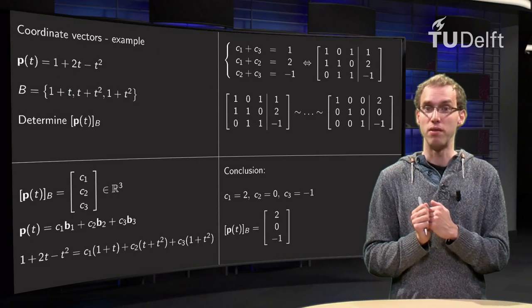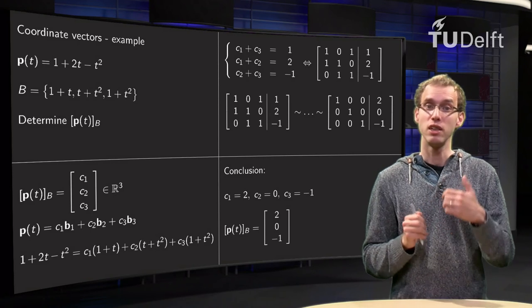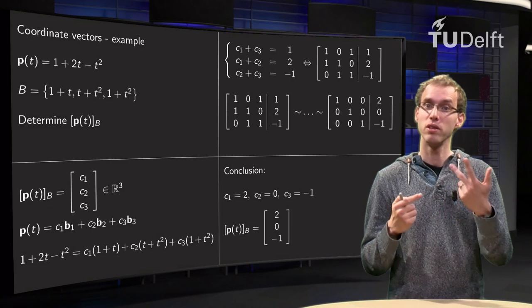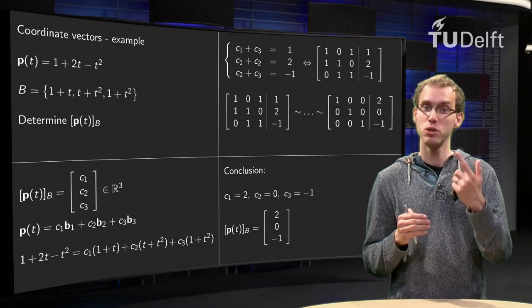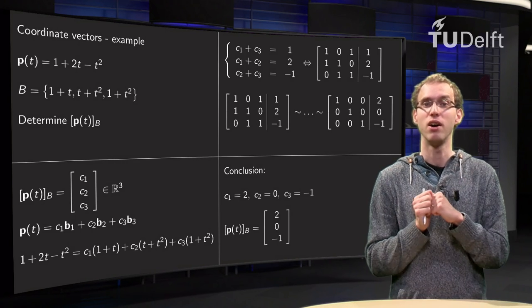And that means we have found our coordinate vector. That's just the vector which contains c1, c2, and c3. So the coordinate vector of p in the basis B equals [2, 0, -1], a vector in R³.